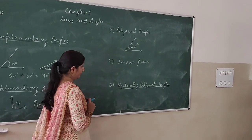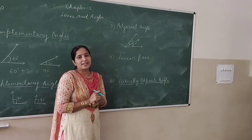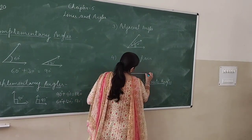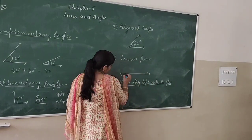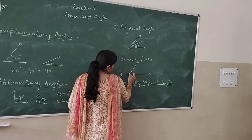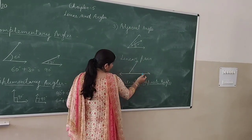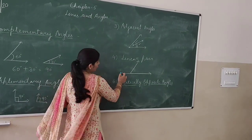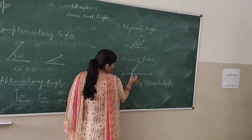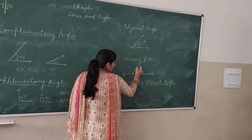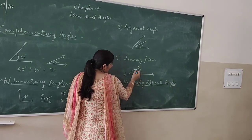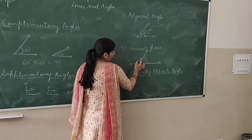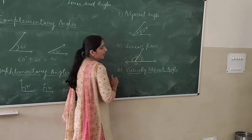Next is linear pair. In a linear pair, we are also taking adjacent angles, but there is a difference. In a linear pair, the non-common arms should form a straight angle — that is, they form a straight line — with a common vertex, say O. If we add these two angles, they become 180 degrees. So these two angles form a linear pair of angles.